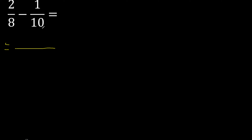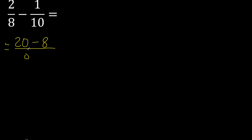First, multiply like this, then multiply by 2. 20 minus 8, multiply by 1 is 8. Here, 8 multiply by 10 equals 80.